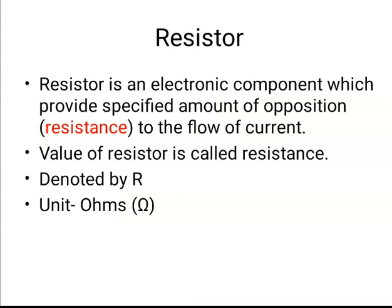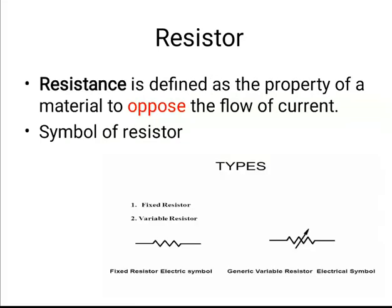You have probably heard the term resistor many times. A resistor is an electronic component which provides a specific amount of opposition — that is, resistance — to the flow of current. The value of a resistor is called resistance. It is denoted by R, and the unit is ohms. We say three ohms, four ohms, one hundred ohms, one hundred kilohms. The unit is named after the scientist Ohm.